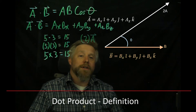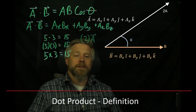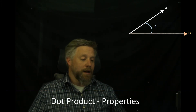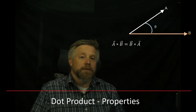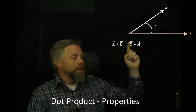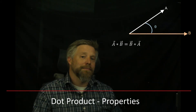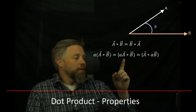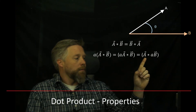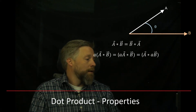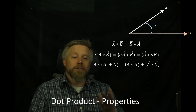Let's talk about some properties of the dot product. The first is the commutative property: A dotted with B equals B dotted with A — you can put them in either order and get the same answer. The second is that if we have a scalar multiplied by a dot product, we can put that scalar with either vector and get the same answer.